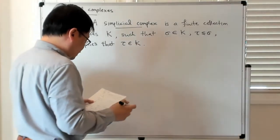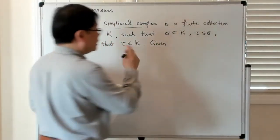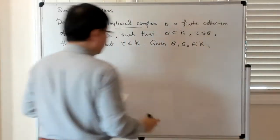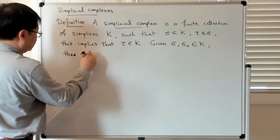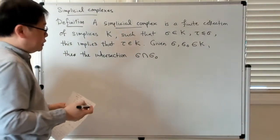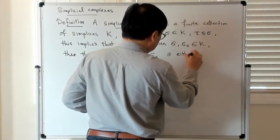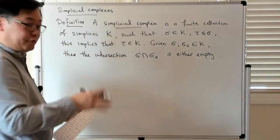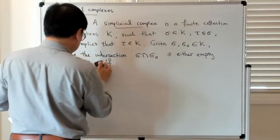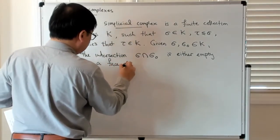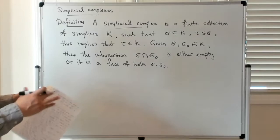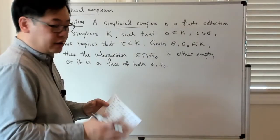Another property is that given two elements of the simplicial complex, sigma and sigma-zero in the complex, you can look at their intersection. Sigma intersect sigma-zero is either empty, or it is a face of both of these simplices. Put another way, this guarantees that the simplices are glued together nicely so that when they intersect, they only intersect on their faces.